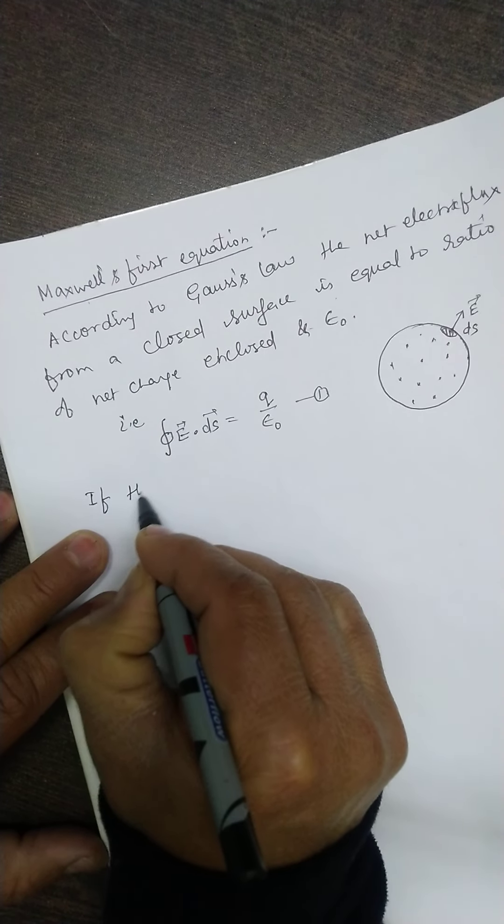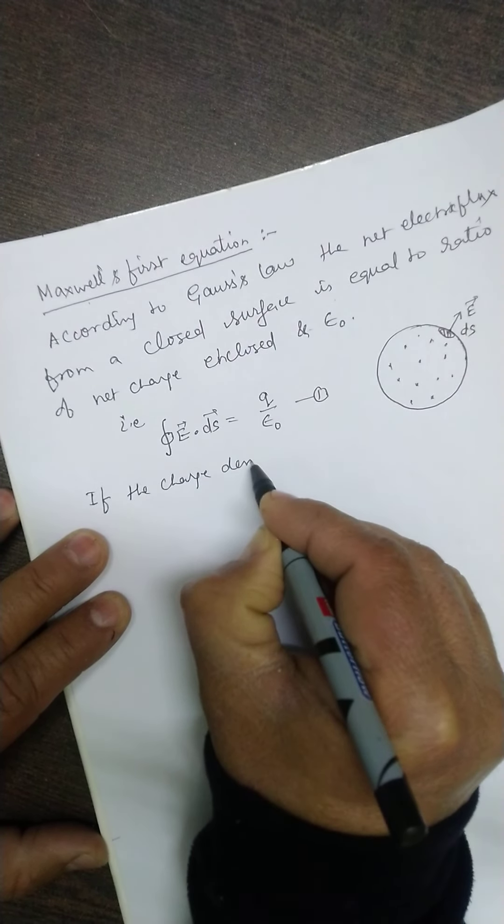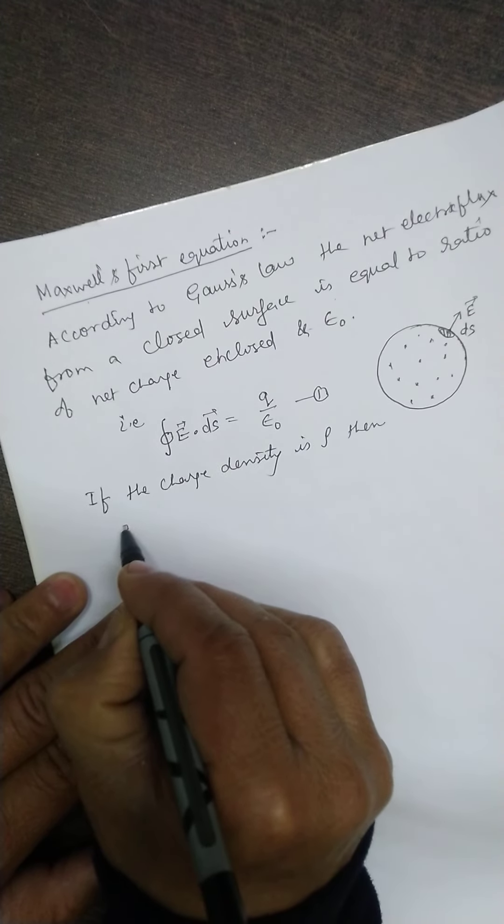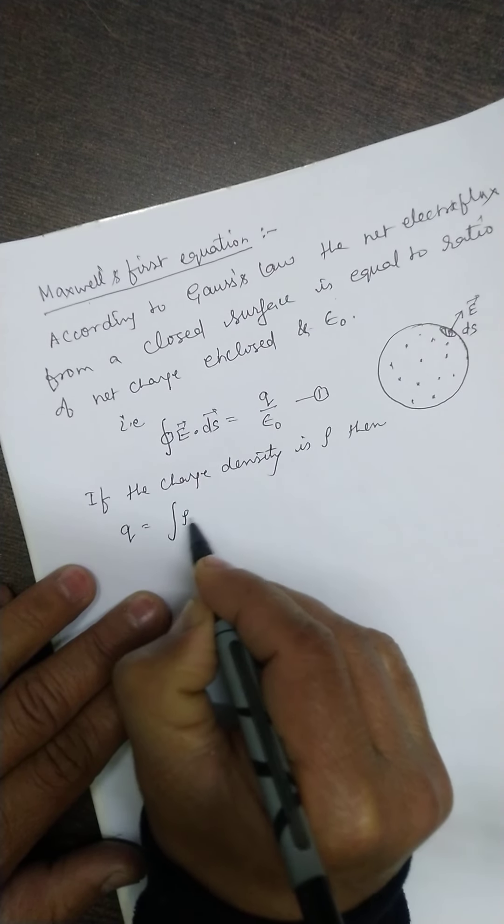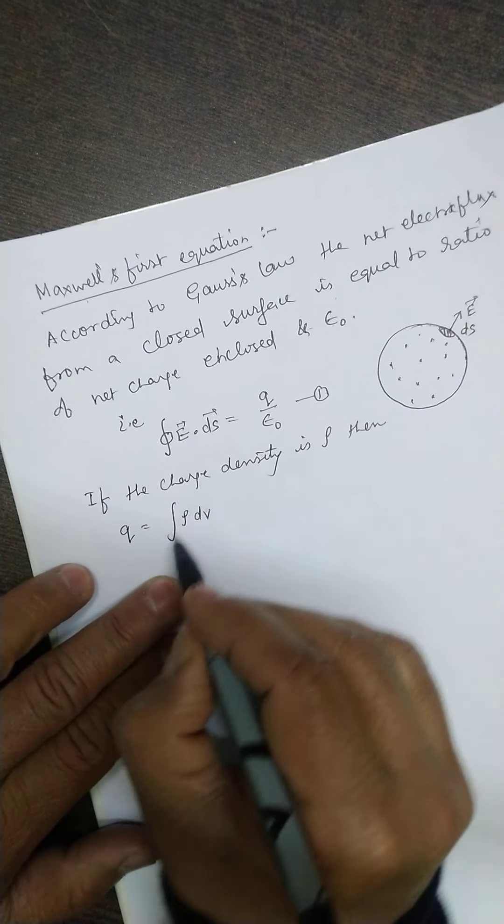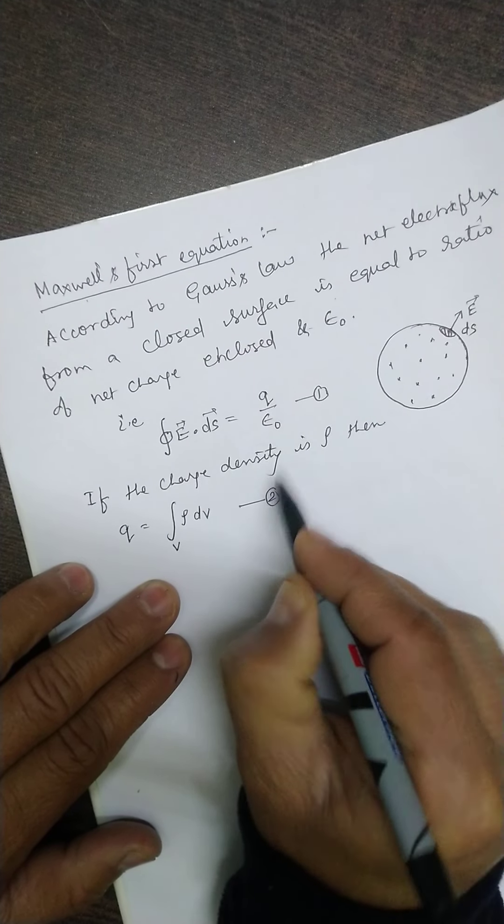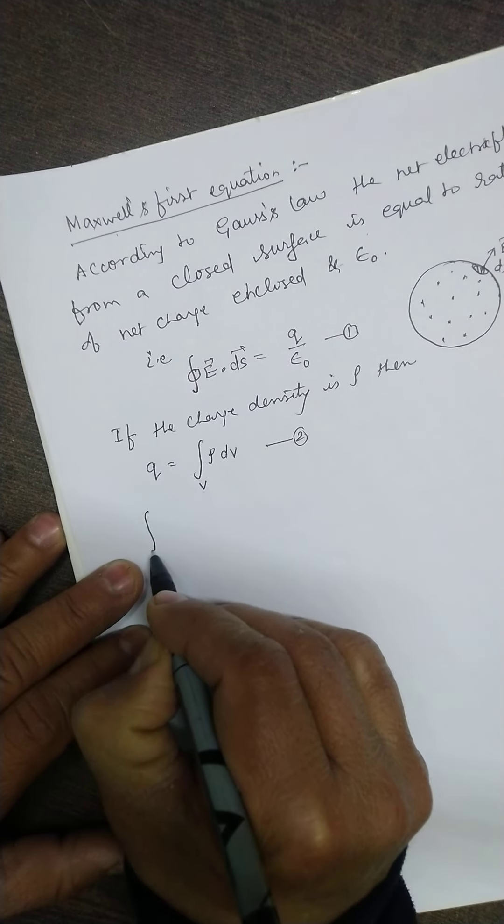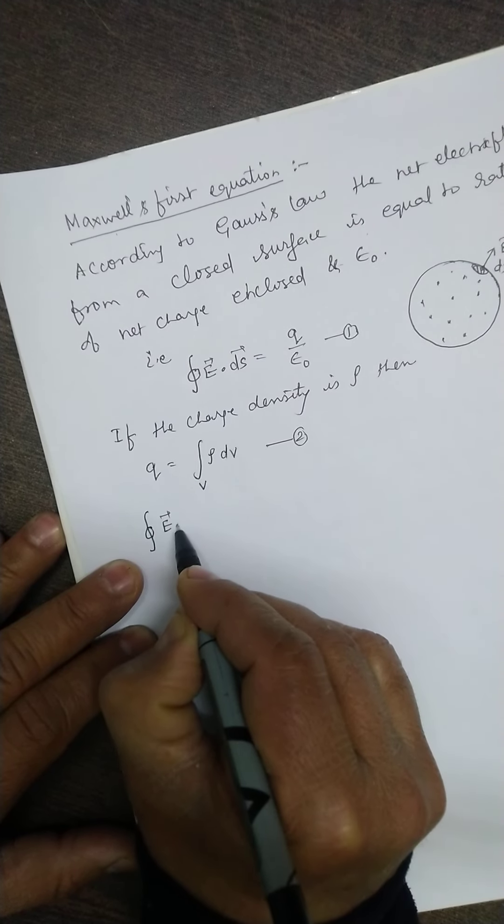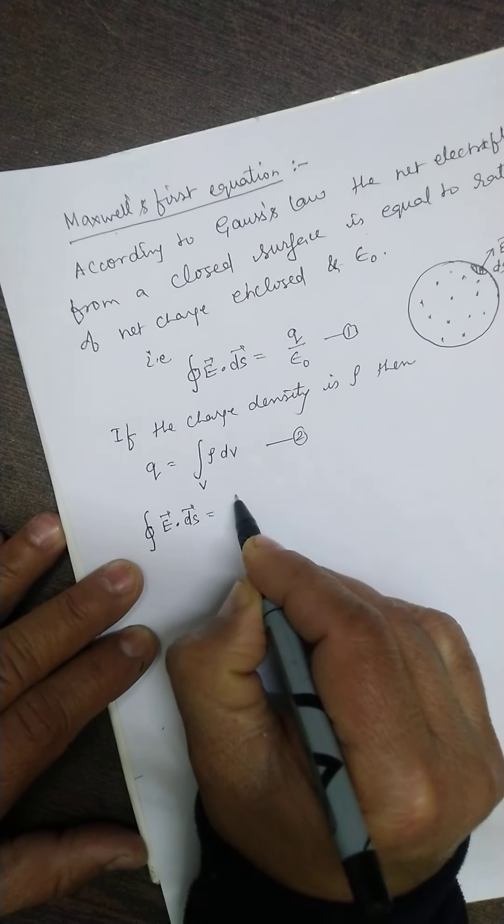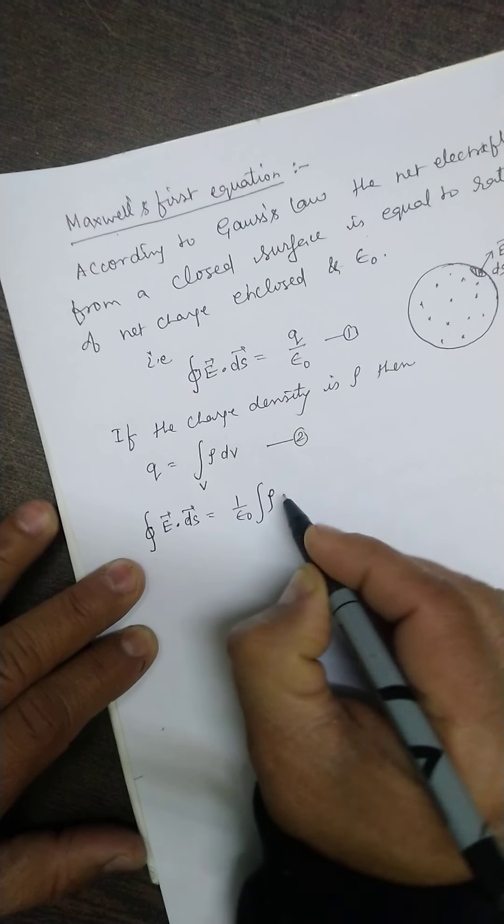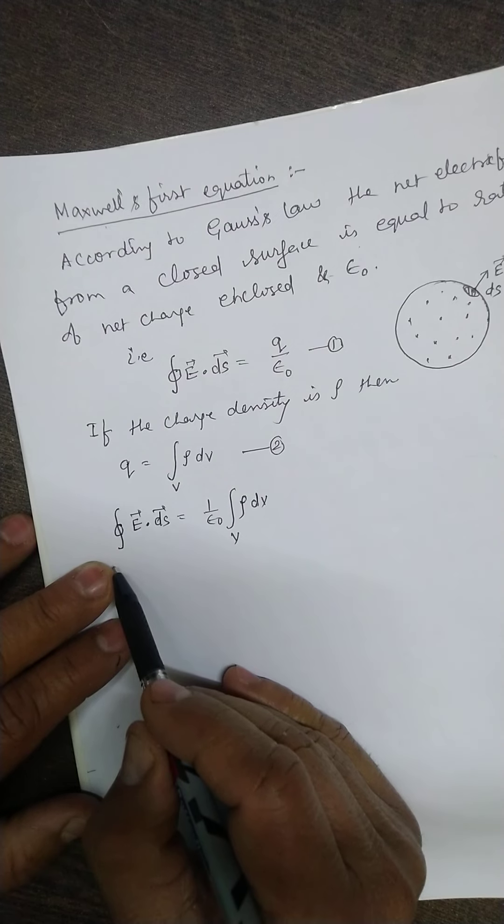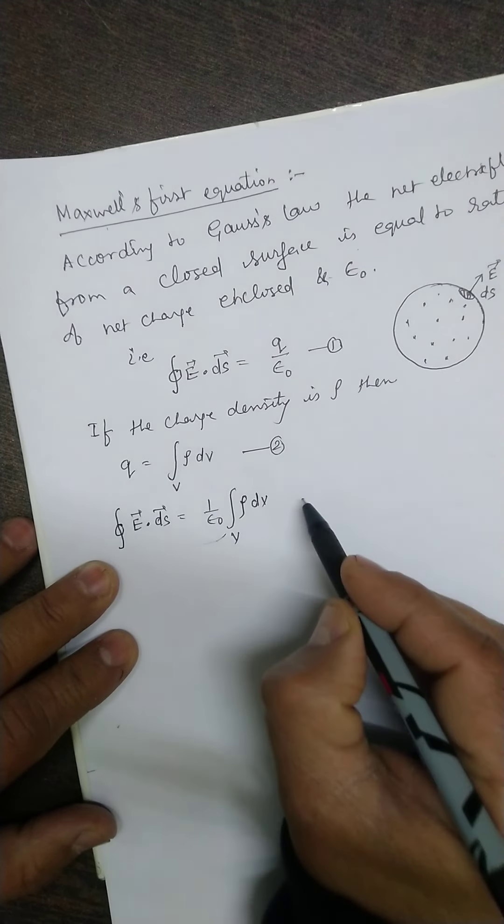If the charge density in the closed surface is rho, then total charge enclosed q can be written as rho dV, integration over the whole volume. So I can equate these equations and get that net electric flux from the closed surface is equal to 1 upon epsilon 0, integration of the charge density over the volume which is enclosed by the closed surface. This closed surface must enclose the whole volume.